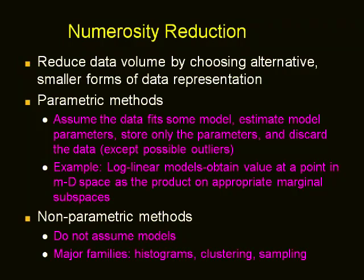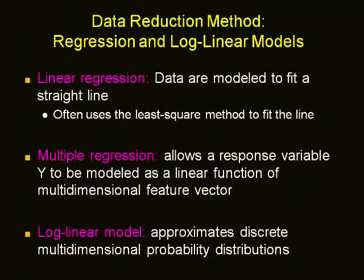The next approach is numerosity reduction, which reduces data volume by choosing alternative smaller forms of data representation. These are categorized as parametric and non-parametric methods. In parametric methods, we assume the data fits some model, estimate the model parameters, and store only the parameters, discarding the data. Log-linear models are an example. In non-parametric methods, no models are assumed; instead, histograms, clustering, and sampling are used to store the reduced representation.